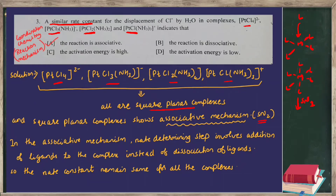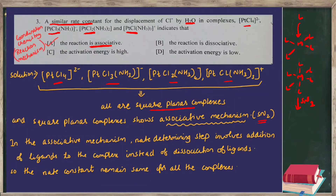In SN2, the first step — the rate-determining step — involves addition of the external ligand, H₂O. If it were SN1, dissociation would occur first and the rate would differ across complexes since they contain different ligands. But because they are square planar and undergo association, the rate constant is independent of the nature of the other ligands in the complex. So the answer is that the reaction is associative.